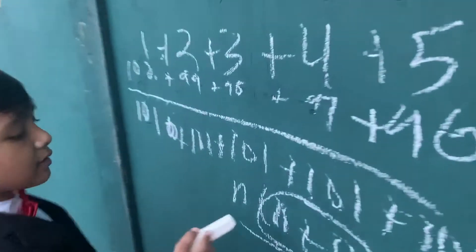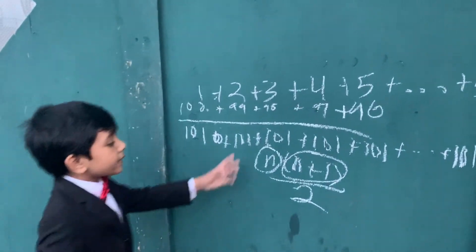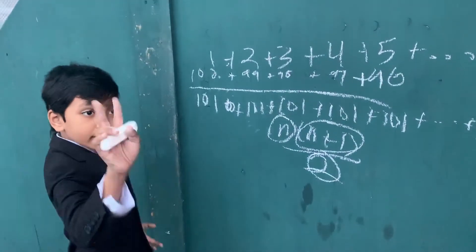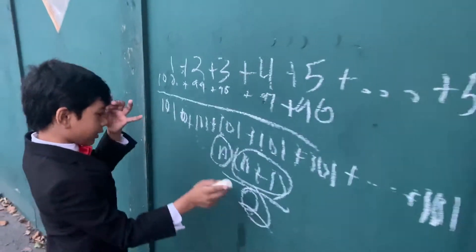Now, each pair requires two numbers. So n both accounts for the greatest number and the number of numbers. So each pair has two numbers. So that's where the n over 2 comes from.